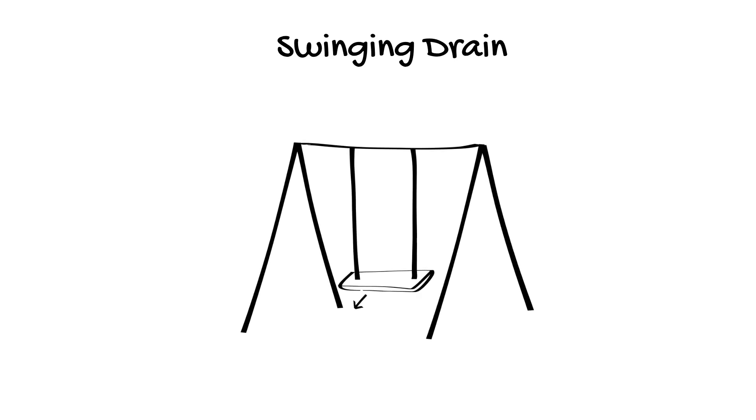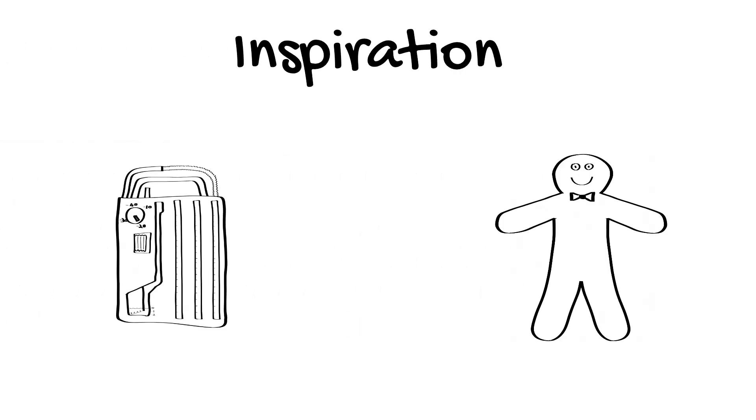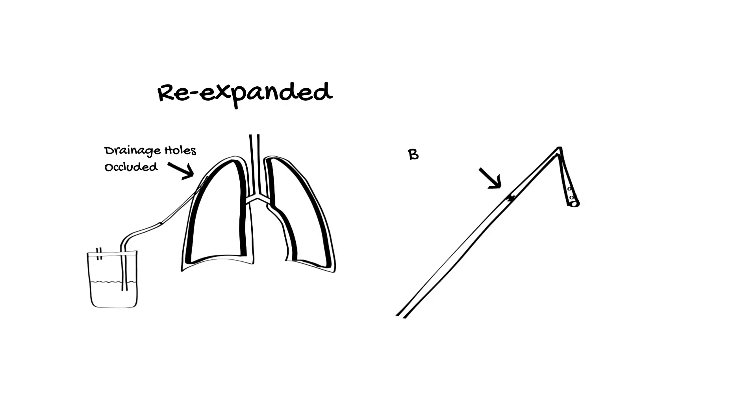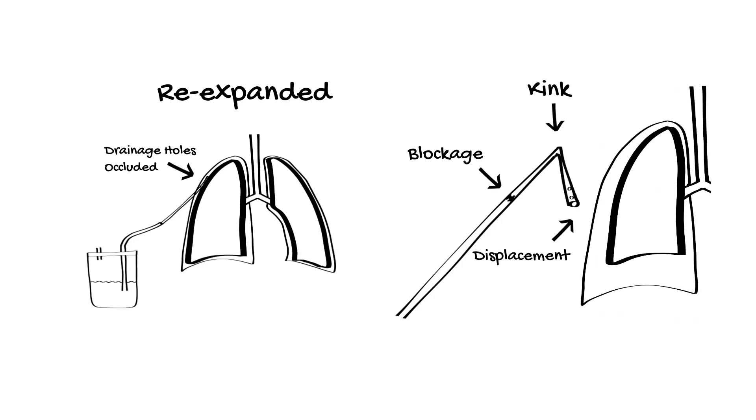A swinging drain describes movement of fluid with the respiratory cycle either in the drainage tubing or in the underwater seal chamber. During inspiration, fluid moves towards a spontaneously breathing patient due to negative pressure in the pleural space and away from a patient on positive pressure ventilation due to an increase in intrathoracic pressure during inspiration. A swinging drain indicates that there is a patent connection to the pressure changes that are occurring in the pleural space with ventilation. If the drain doesn't swing, either the lung has re-expanded and is occluding the drainage holes, or there may be a blockage, kink, or displacement of the chest drain.